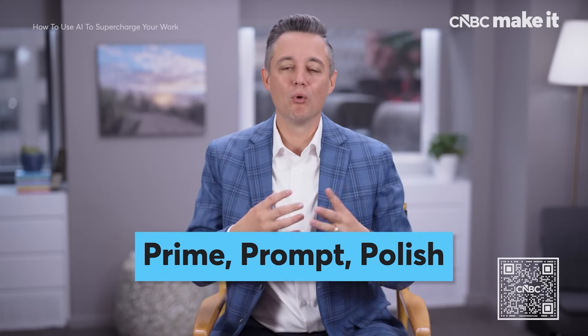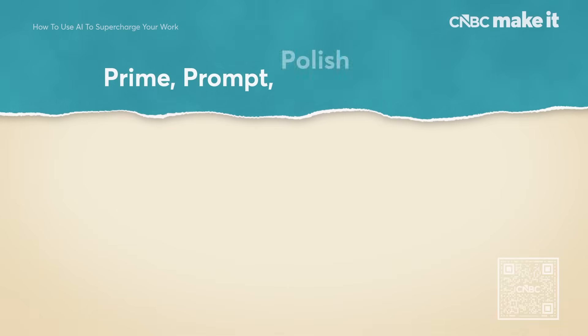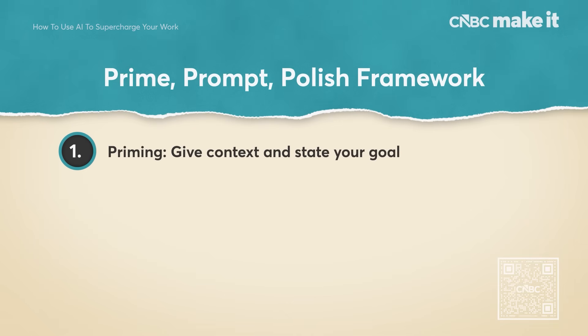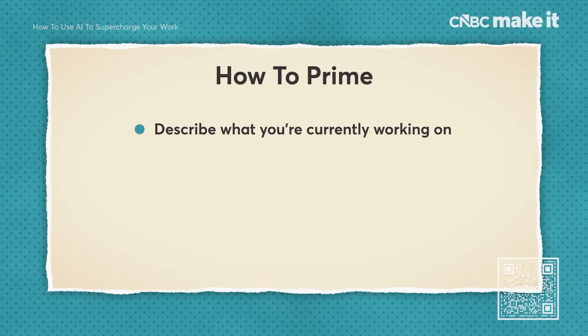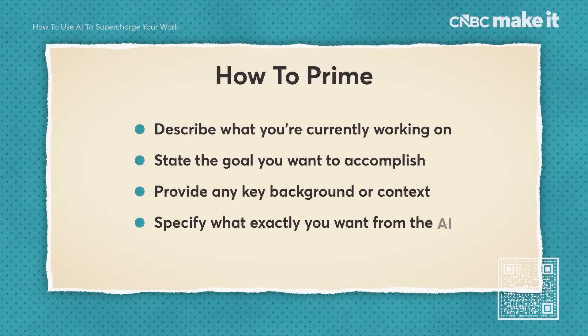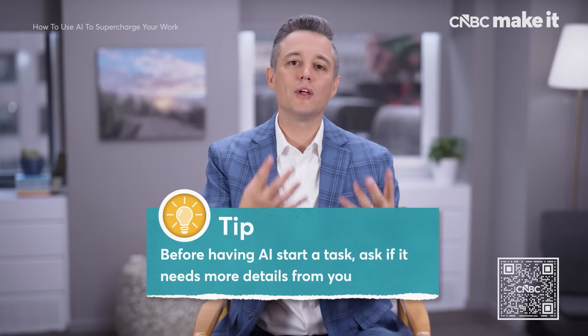I've taught over 15,000 people live for the last three years on our prompting process called Prime Prompt Polish. More than anything, it's about getting people out of the mindset that they get one input and one output from a large language model. Priming means sharing context with the model. Your first message isn't asking for an output — it's saying here's everything I'm working on, here's what I'm trying to do, here's context specific to my situation, and the output I want and how I want it outlined. But before we go any further, what questions do you have? What clarifications do you need?